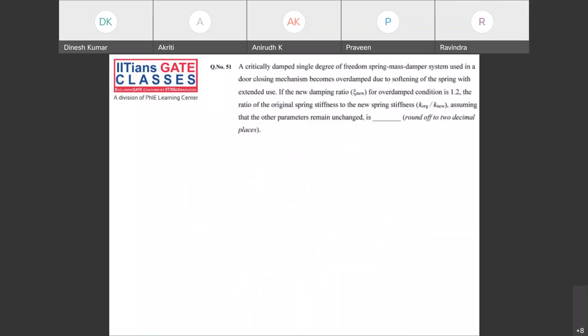Now look into this question number 51. A critically damped single degree of freedom spring-mass-damper system used in a door closing mechanism becomes over-damped due to softening of spring with extended use. If the new damping ratio for over-damped condition is 1.2, the ratio of original spring stiffness to new spring stiffness, assuming the other parameters remain unchanged.